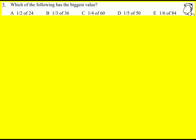The thing to do here is just to do each of the calculations. A half of 24 is the same as dividing by 2, which gives 12. A third of 36 is the same as dividing by 3, also 12.